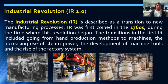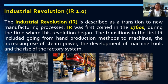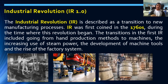During industrial revolution 1.0, the industrial revolution is described as a transition to new manufacturing processes. It was first coined in the 1760s when the revolution began. The transitions included going from hand production methods to machines, increasing use of steam power, development of machine tools, and the rise of factories — from handmade production to machine-based production to develop products.